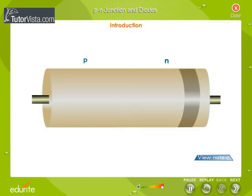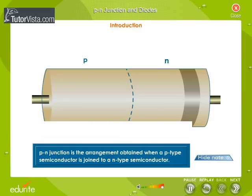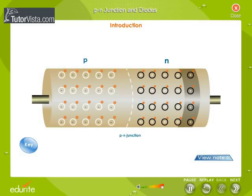Here, one half is P-type and the other is N-type. P-N junction is the arrangement obtained when a P-type semiconductor is joined to an N-type semiconductor. Displayed here is a P-N junction.